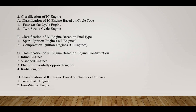Next, classification of IC engine is based on engine configuration. Internal combustion engines are classified by their engine configuration into two categories: reciprocating engines and rotary engines. Reciprocating engines include four-stroke and two-stroke engines, while rotary engines include Wankel and turbine engines. The classification is based on the motion of engine components that convert fuel energy into mechanical energy. Configurations include inline engine, V-shaped engine, flat or horizontally opposed engine, and radial engine.